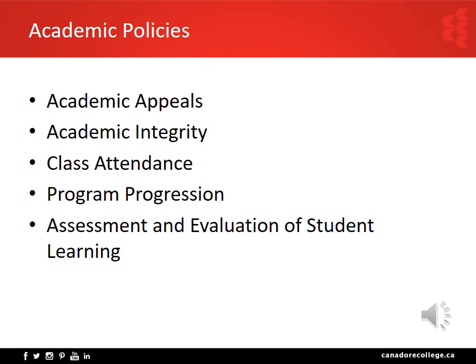Academic Appeals: The purpose of this policy is to provide students with a fair and timely process to appeal a procedural error regarding a final grade that impacts their academic standing or progression within a program. The procedure details the steps and timelines needed to appeal a grade. Academic Integrity: This policy defines academic integrity and breach of academic integrity, and sets the framework for documenting penalties for breaches. Students who breach academic integrity will be subject to disciplinary action up to and including suspension or revocation of an academic credential. Repeated offenses will result in a more serious penalty than the previous one imposed.